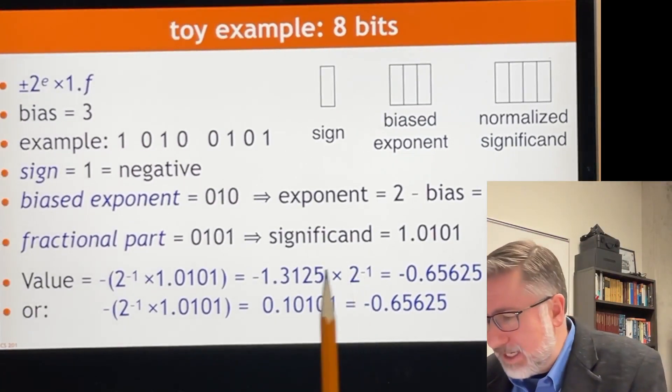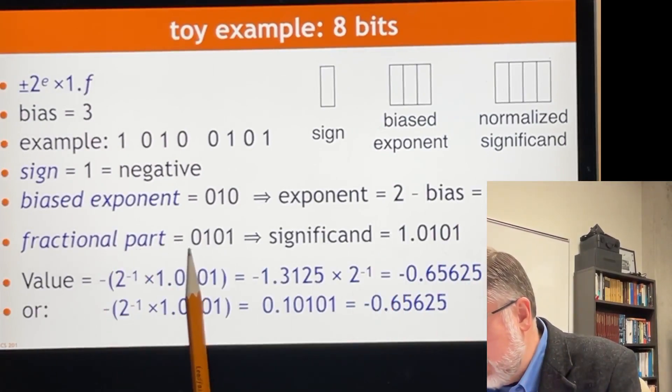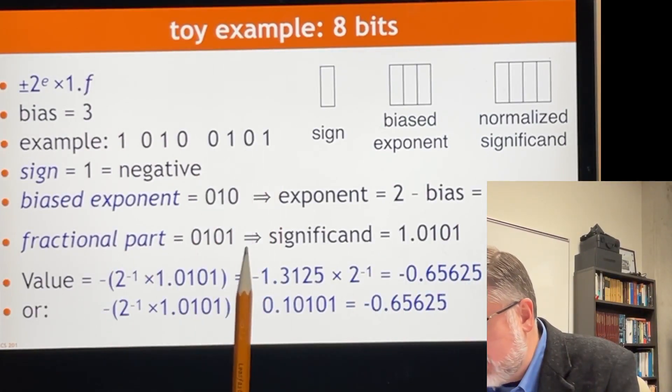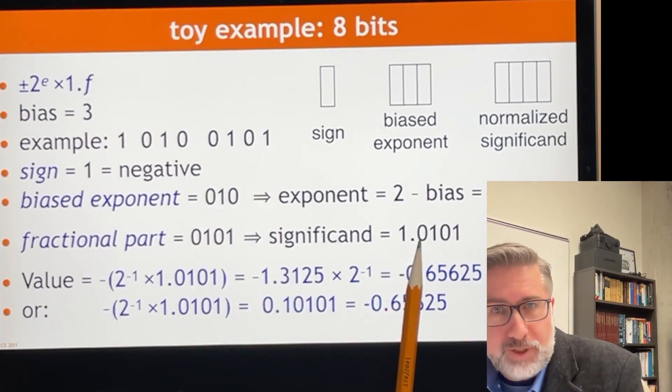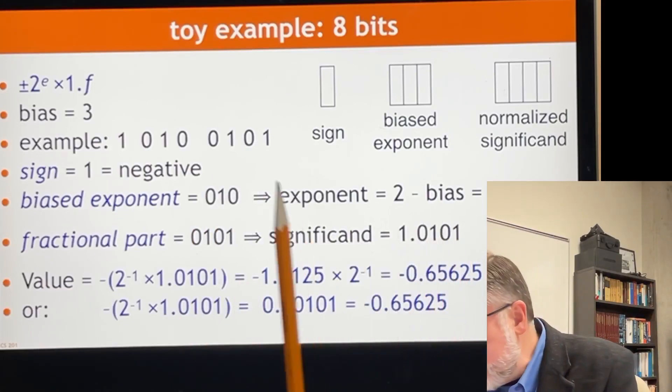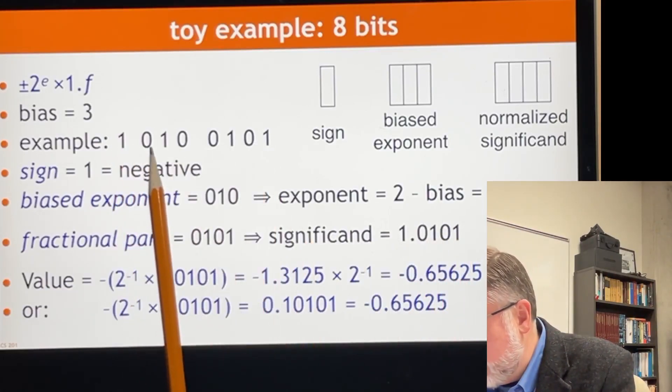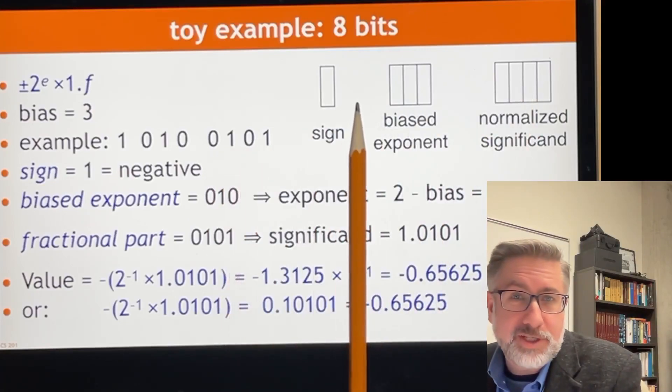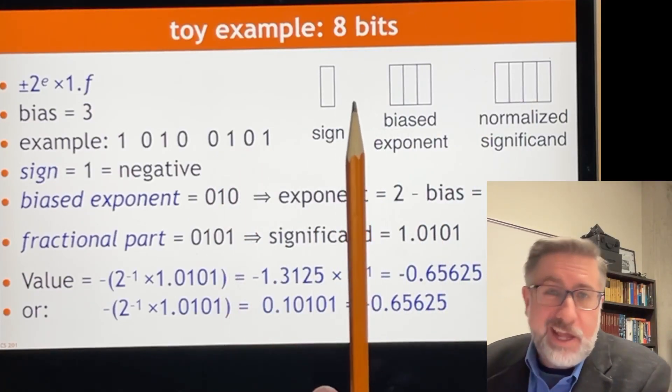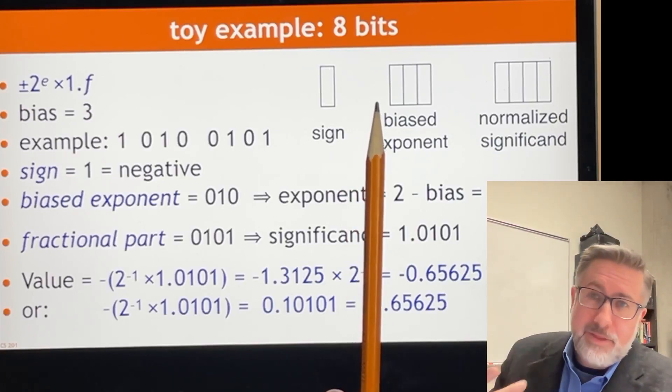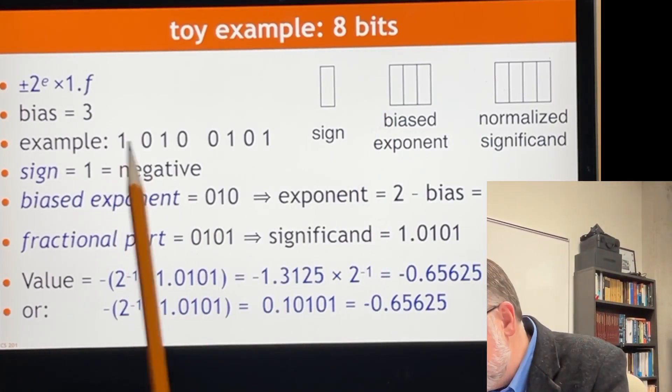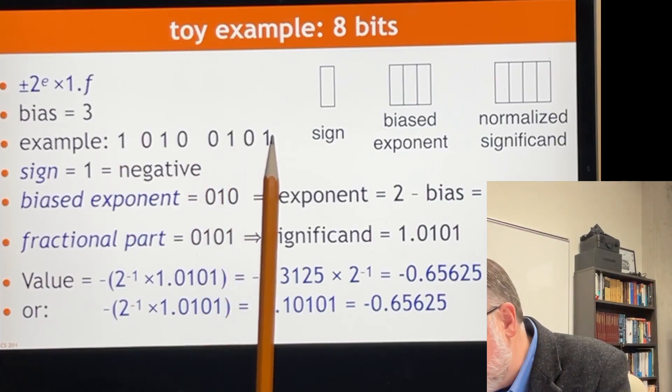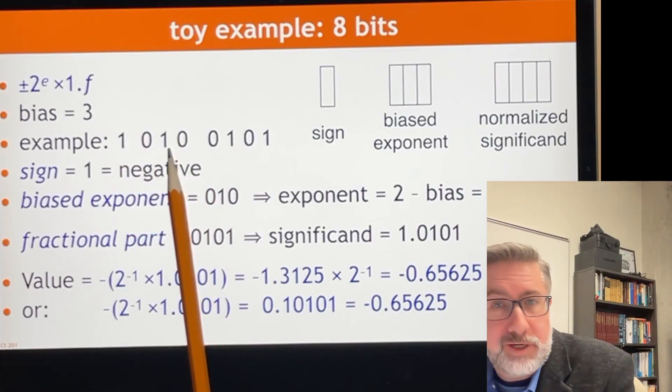The fractional part, like I said, is going to be 0, 1, 0, 1 for this example, which represents 1.0101. So if we have this number, 1, 0, 1, 0, 0, 1, 0, 1 in this representation, then if we say this is a floating point number, then it means negative 1.0101 times 2 to the negative 1.